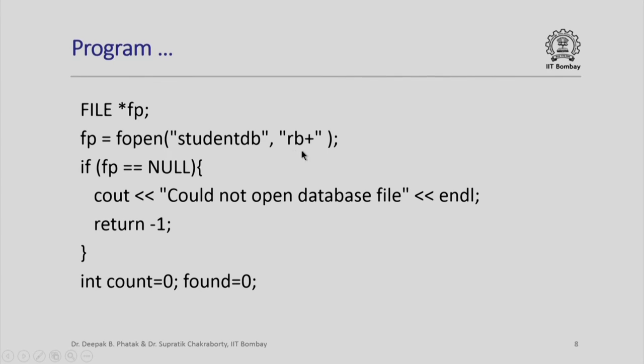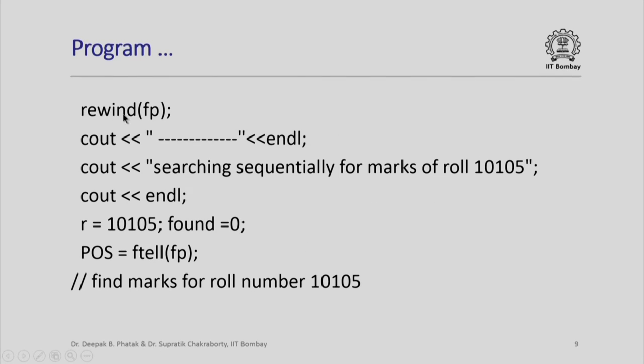We have a single file to process, the same file from which we will read data and the same file to which we will write updated data records or additional data records. We use a special parameter in the fopen statement. The name of the file is student DB, but we open as rb+. It means ordinarily it is open for reading, but I can also write to it. This is a binary file represented by b. As usual, if the file pointer returned is null, I print an error message and get out.